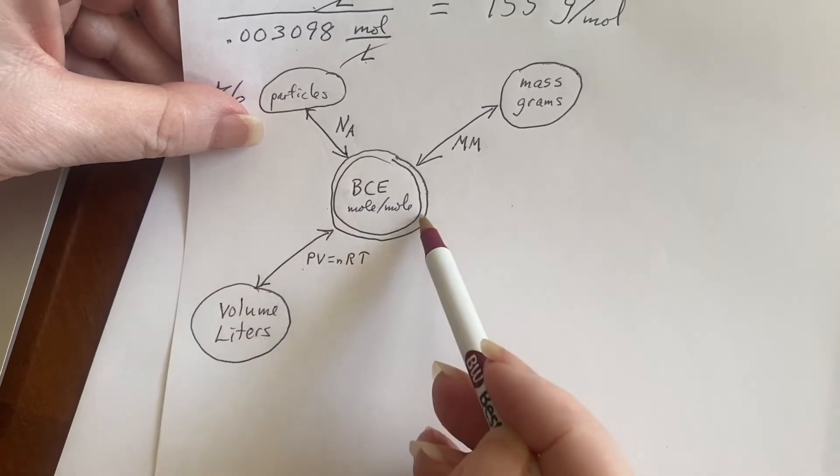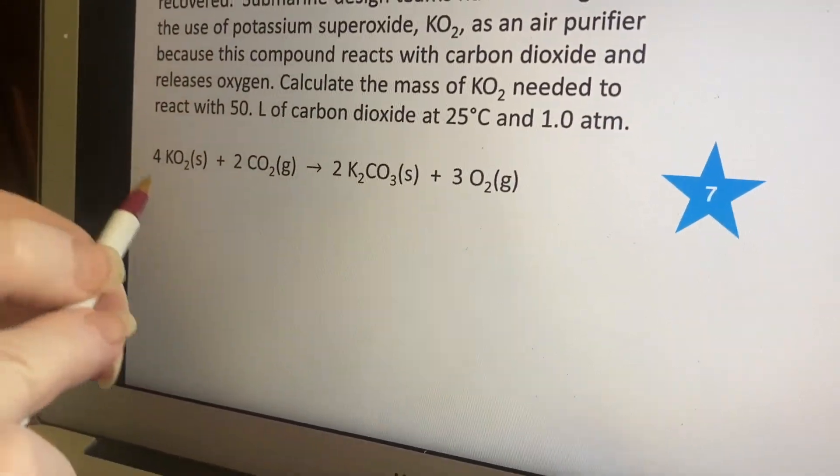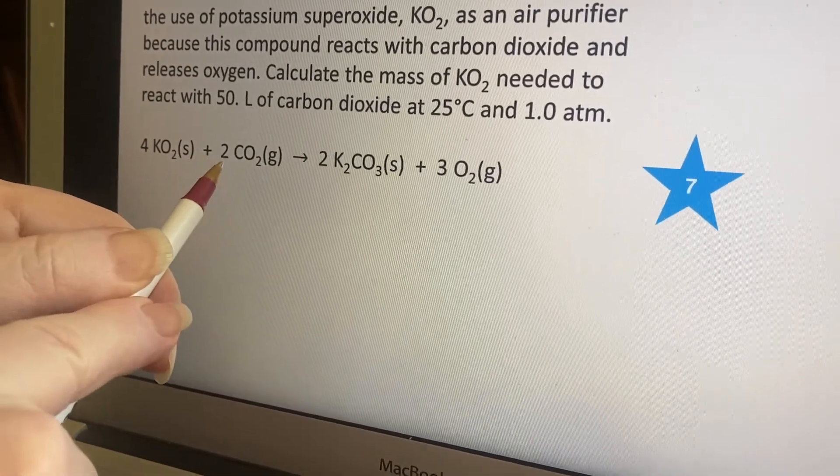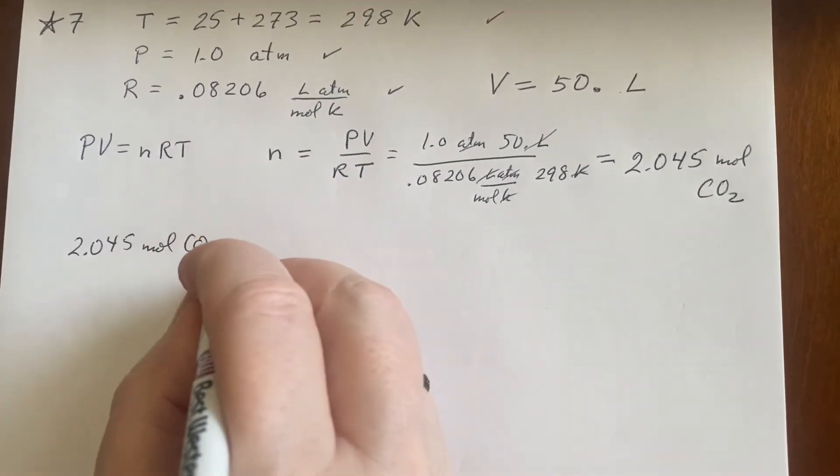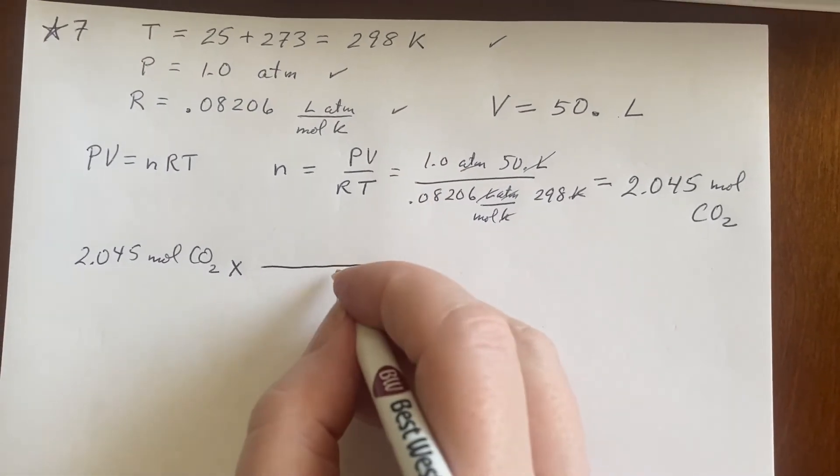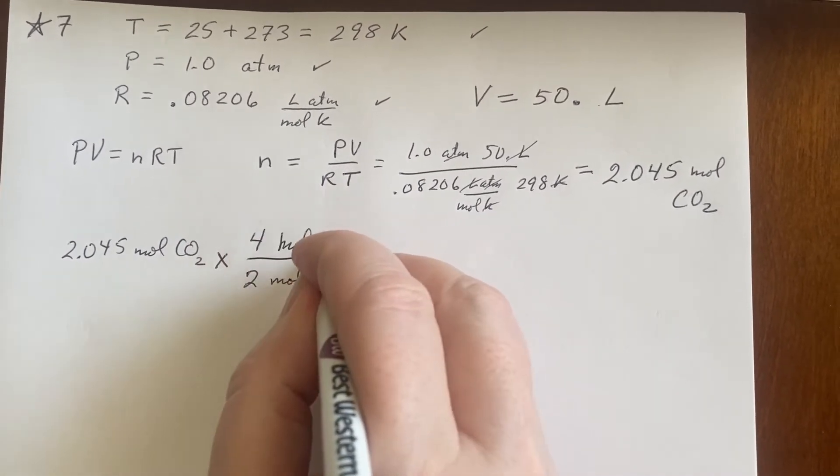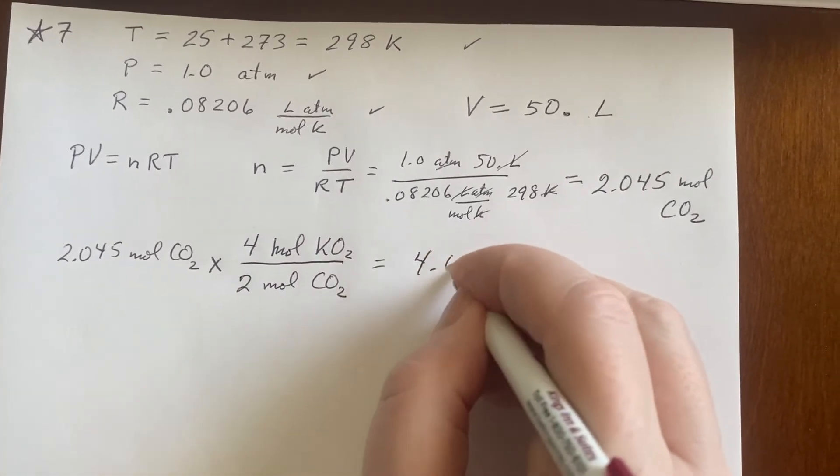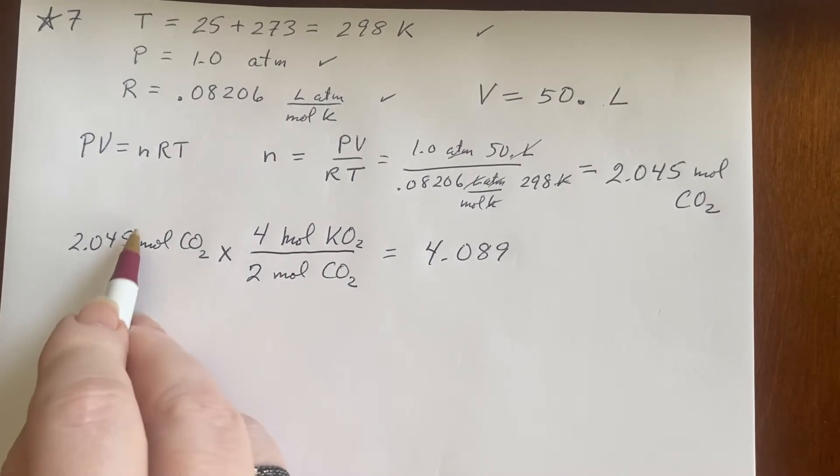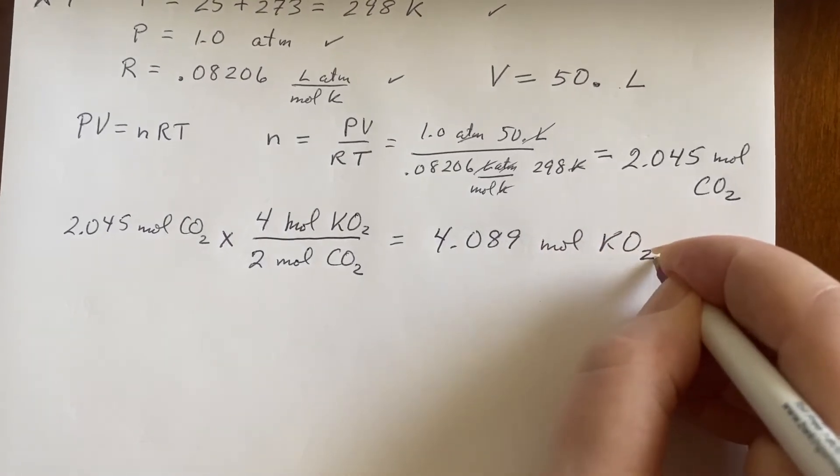Now I need to switch substances because the question is about the potassium superoxide. So I'll use the balanced chemical equation. I want to switch between carbon dioxide and the potassium superoxide. There's a two, there's a four. There's 2.045 moles of carbon dioxide times from that balanced chemical equation. It says two moles of carbon dioxide. It ends up using four moles of the potassium superoxide. That's nice. That's just saying multiply by two. 4.089, mind you, that's because I have this on my calculator and it rounded this way. Moles of potassium superoxide. I feel like I've gotten there.